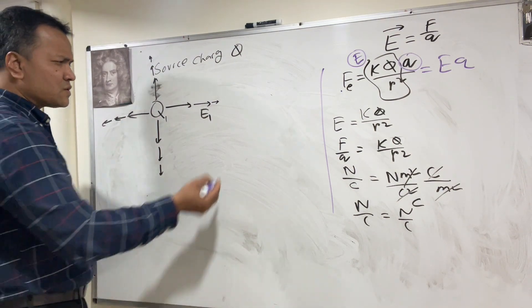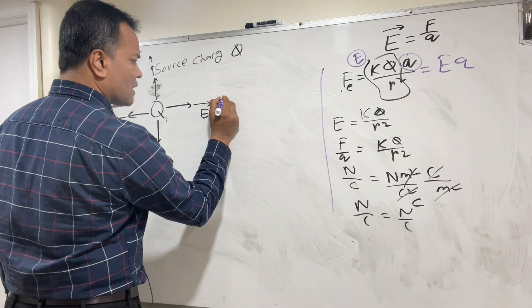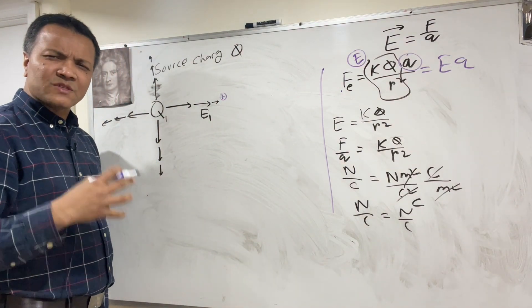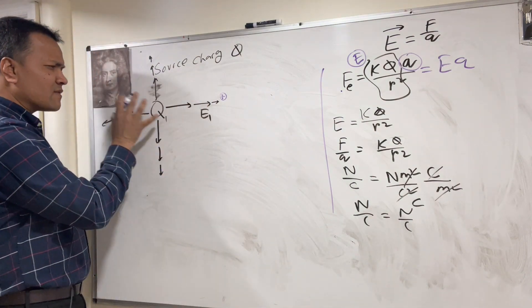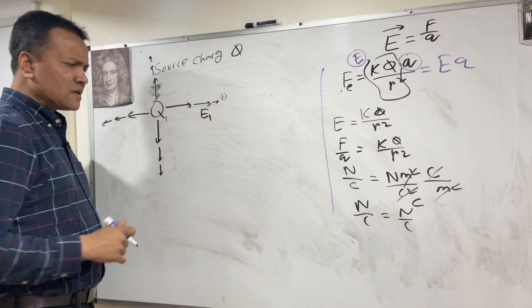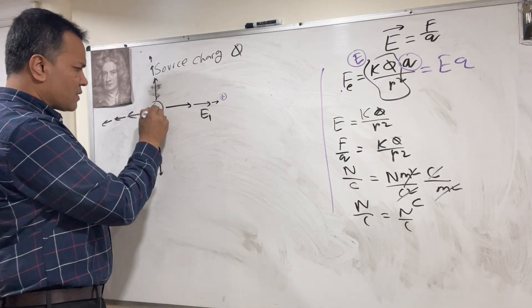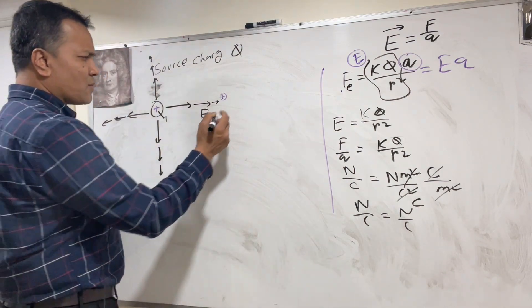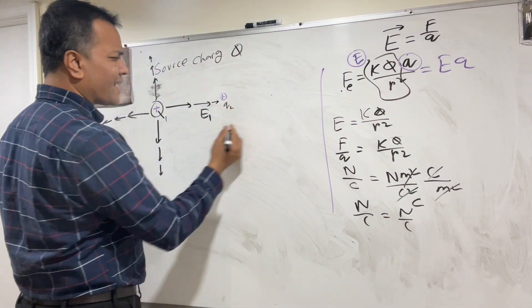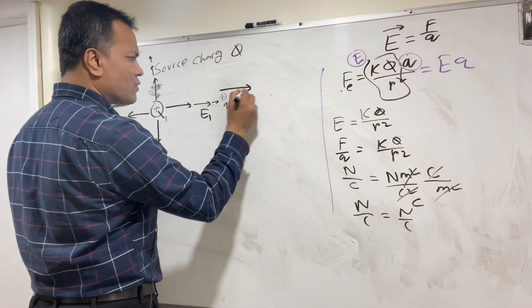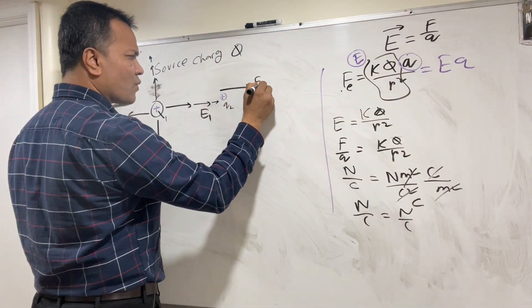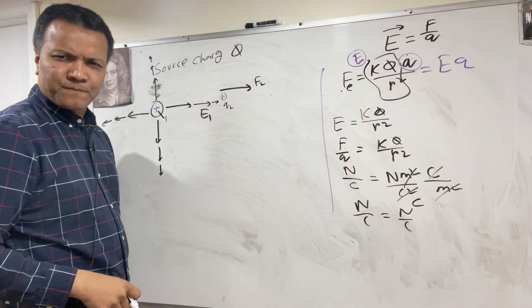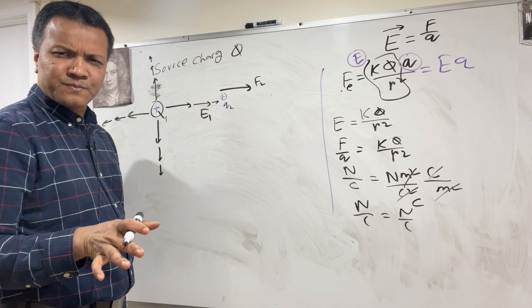Q1 cannot create a force on itself — you need another charge to experience a force. So we bring in a small point charge Q2 (the test charge). Q2 is so tiny its field never influences the source field. Q2 then experiences force F2, and the direction of F2 is always the direction of E1.